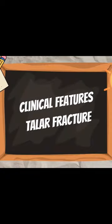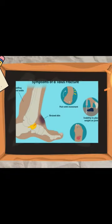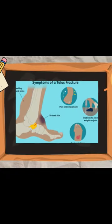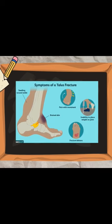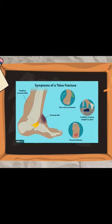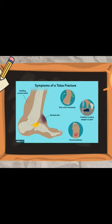Clinical Features of Talar Fracture: Patients will present with a history of high-impact trauma, with immediate pain and swelling around the ankle. If the talus is dislocated, there will be a clear deformity. In isolated, uncomplicated injuries, the main presenting symptoms are predominantly pain and an inability to weight-bear.